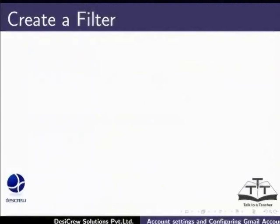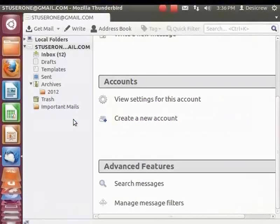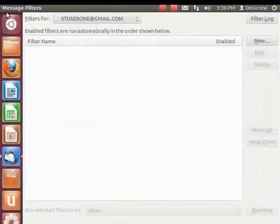Let's create a new filter for this mail account. A filter is a rule that you can apply to sort the messages in your mailbox. Here we shall move all the mails with the subject 'Thunderbird' to the Important Mails folder. From the left panel, select the account stuser1 at gmail.com. Under Advanced Features, click Manage Message Filters. The Message Filters dialog box appears.